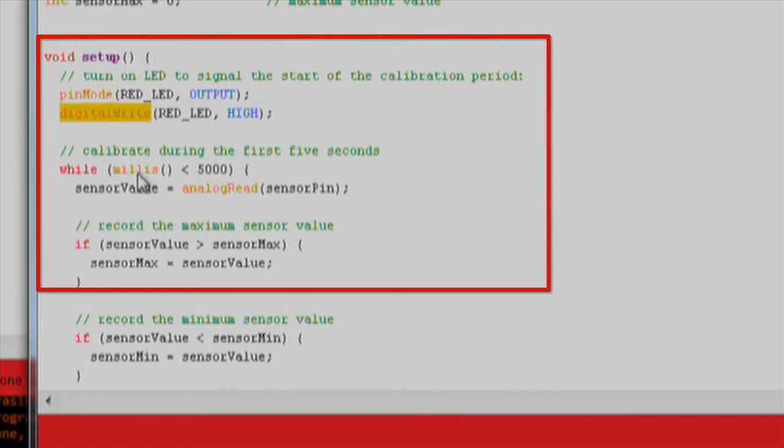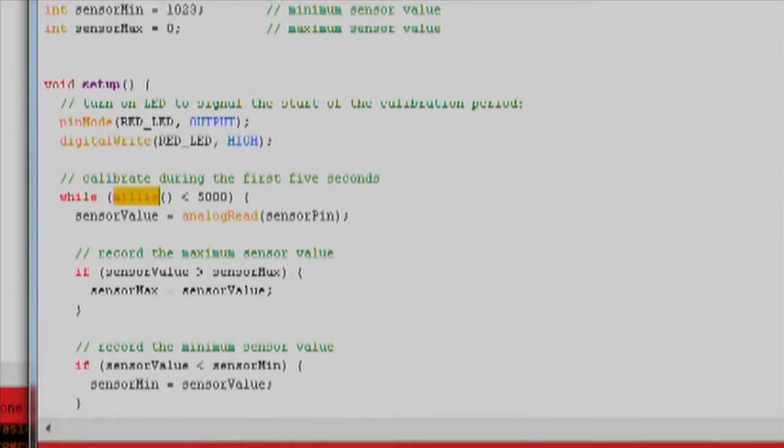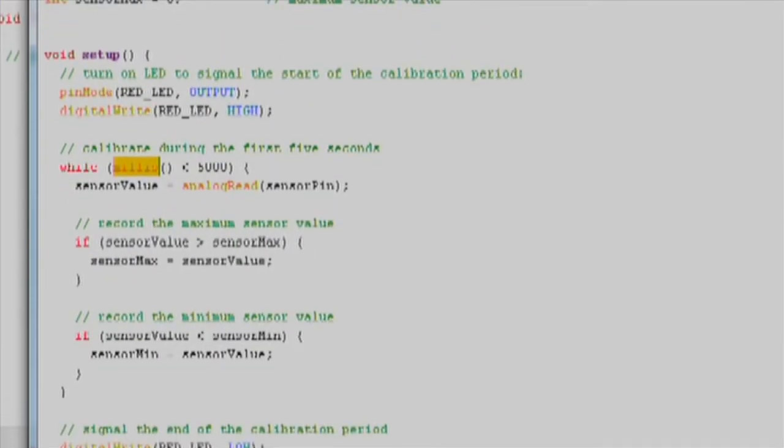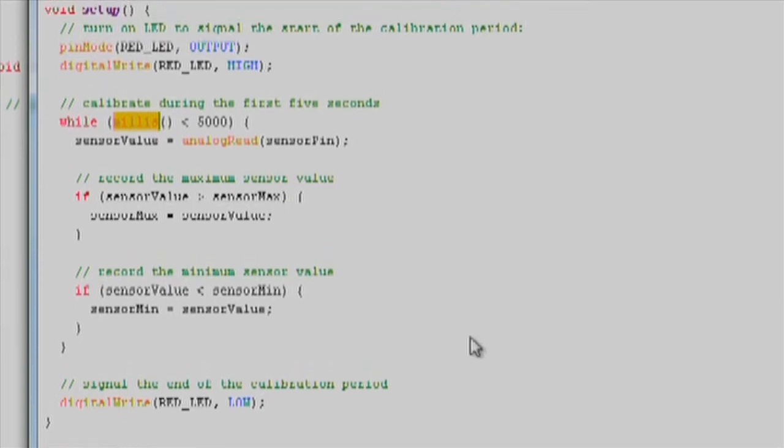Then, we use the millis function to see how long the sketch has been running. As long as the sketch has only been running for less than 5,000 milliseconds, then we continue to calibrate the device.